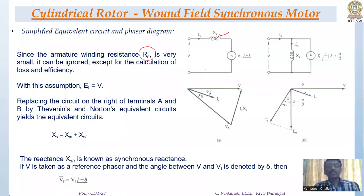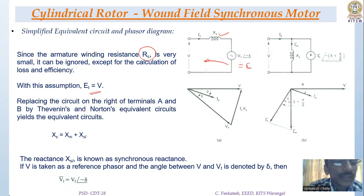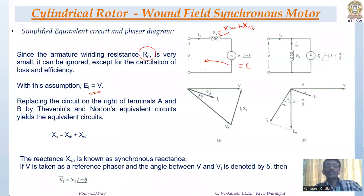With losses neglected, the terminal voltage equals the internal voltage V_f, or E, equal to the supply voltage V. Replacing the right-side circuit using Thevenin's theorem, the combined reactance X_s equals X_m plus X_sl. The field voltage V_f is at an angle of negative delta — V_f normally lags behind the voltage V by an angle delta.